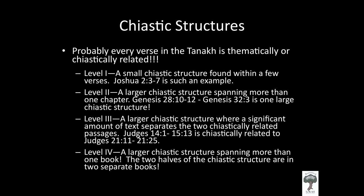Probably every verse in the Tanakh and New Testament is thematically or chiastically related. I've come across about four different levels. Level 1: a small structure found in a few verses, like Psalm 33:6 or Joshua 2:3-7. Level 2: a larger structure spanning more than one chapter, such as Genesis 28:10 through Genesis 32:3. Level 3: a structure where a significant amount of text separates the two related passages — for instance, Judges 14:1-15:13 is chiastically related to Judges 21:11-25.